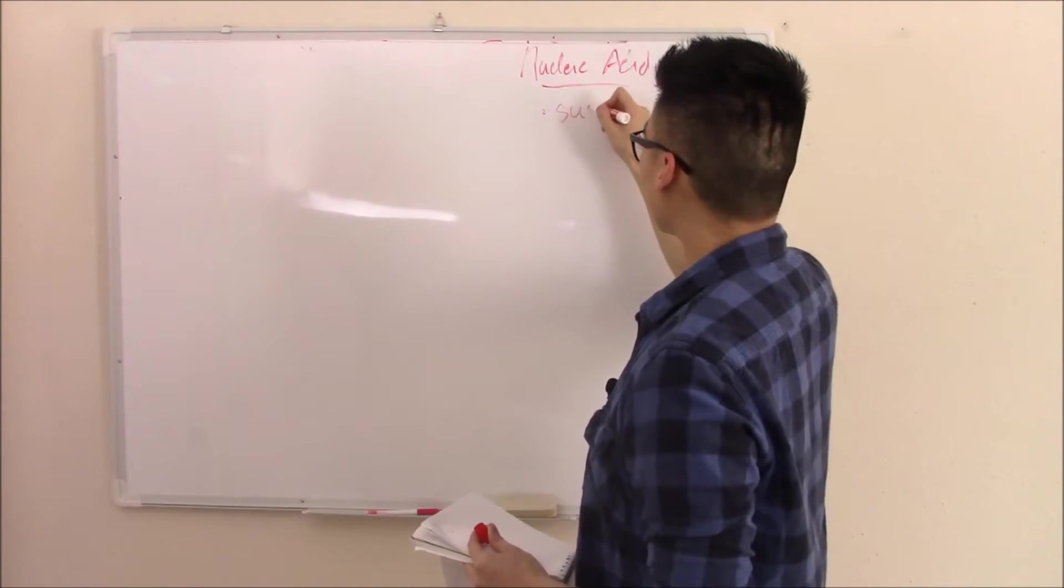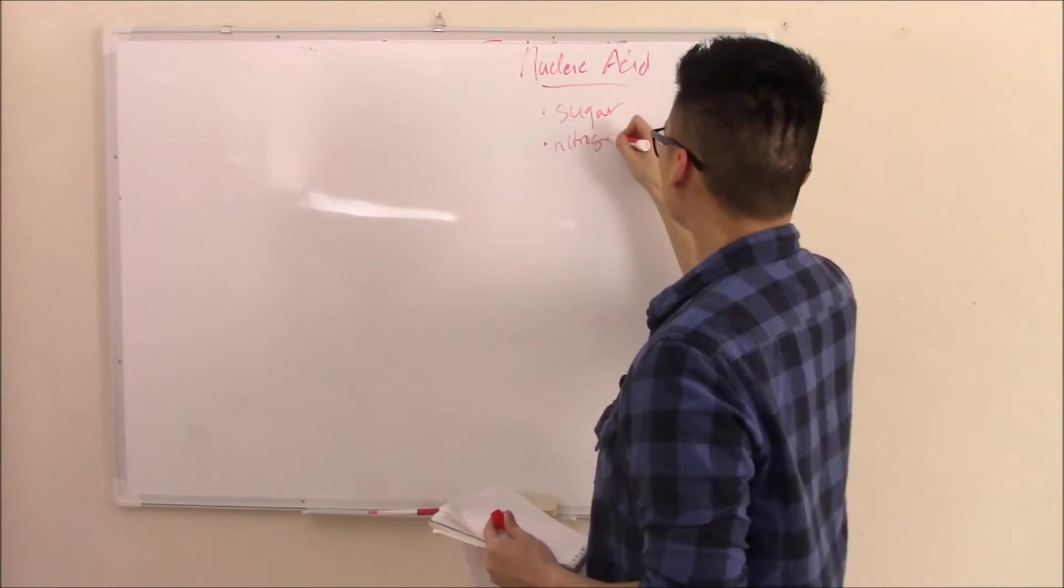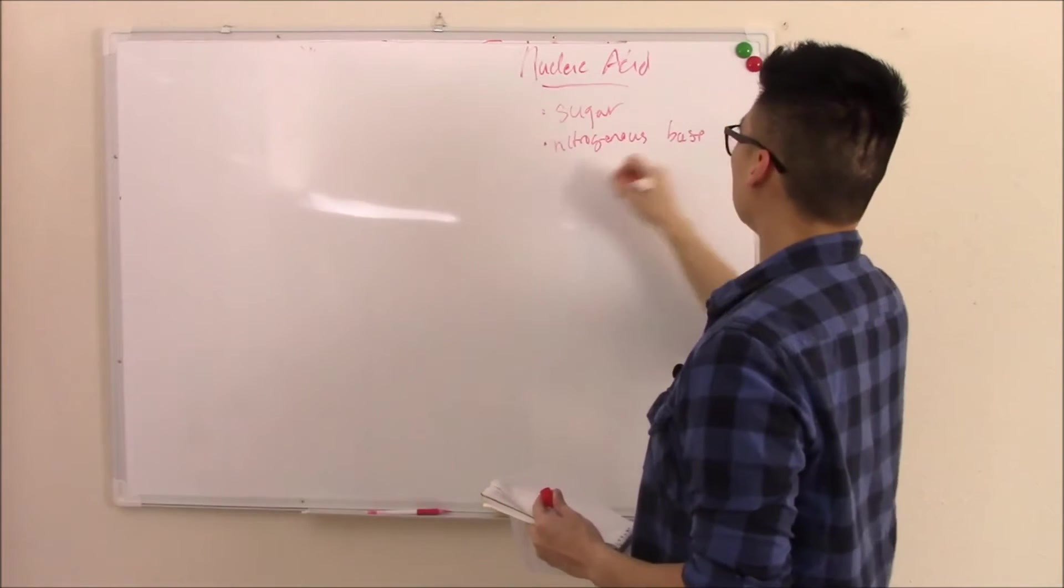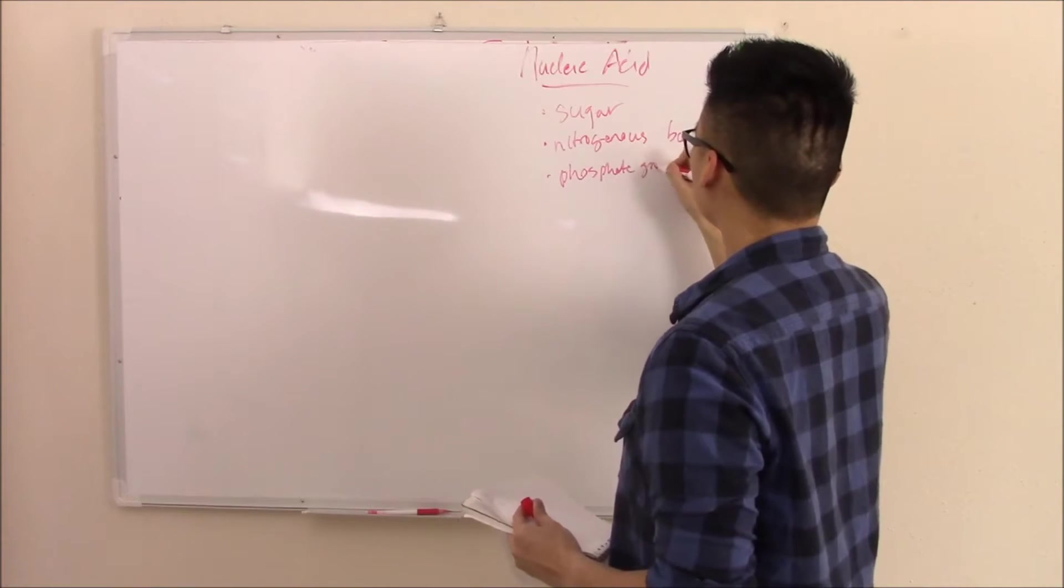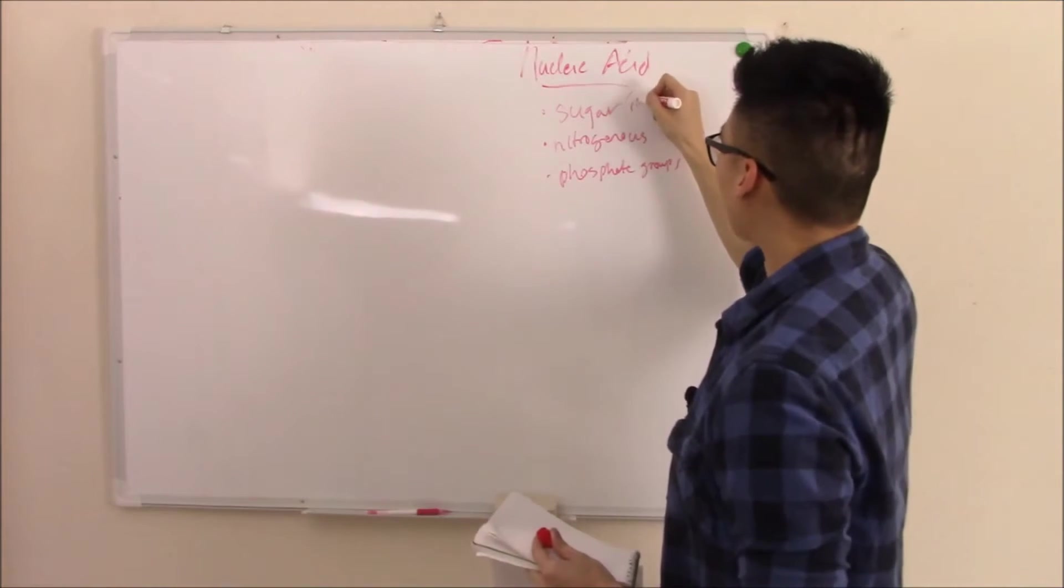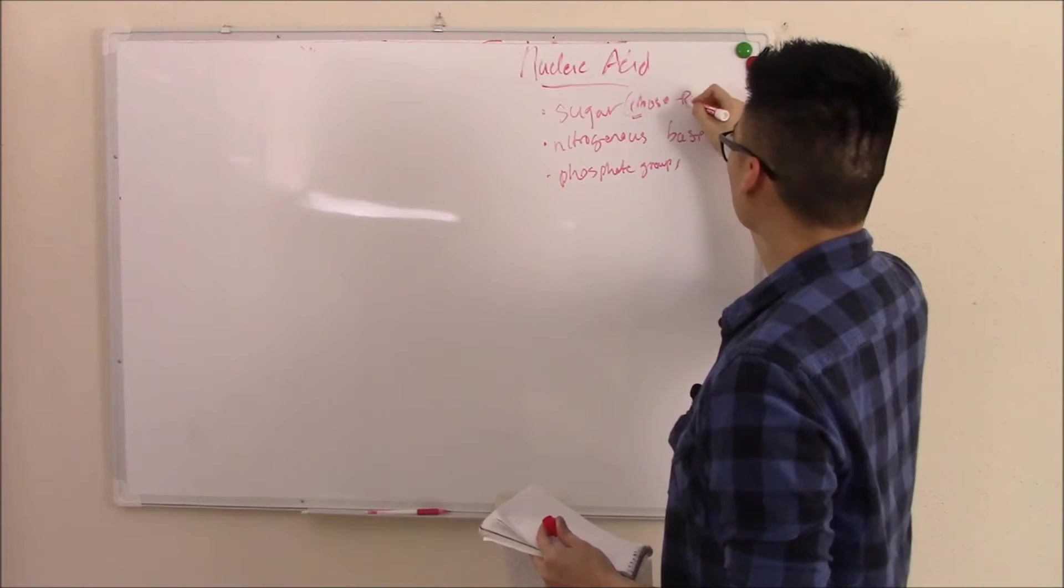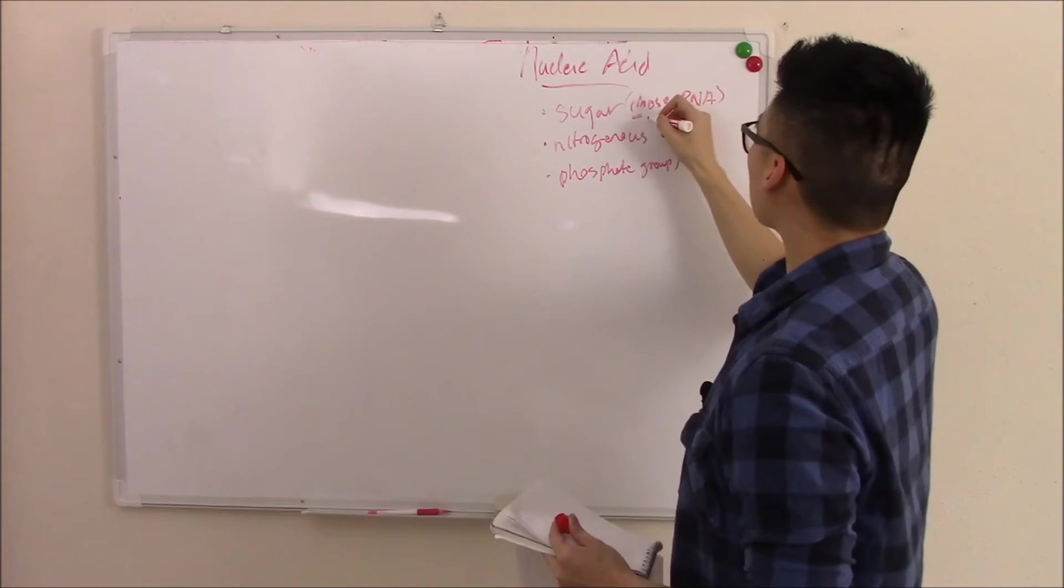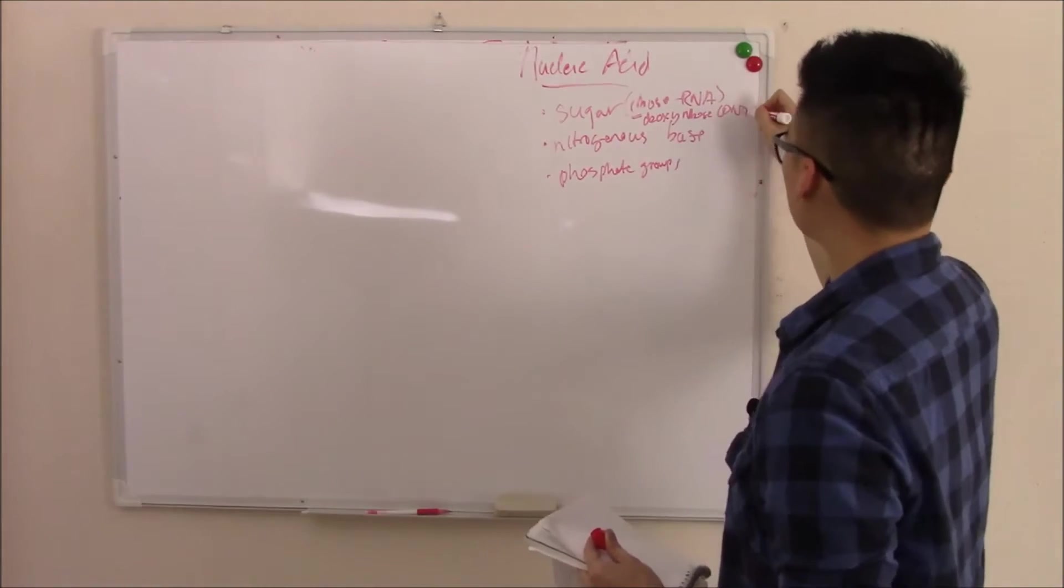They're just made up of sugar, a nitrogenous base, and some phosphate groups. The sugar could be ribose, which is seen in RNA, that's where the R comes in. Or it can be deoxyribose, and that's seen in DNA.